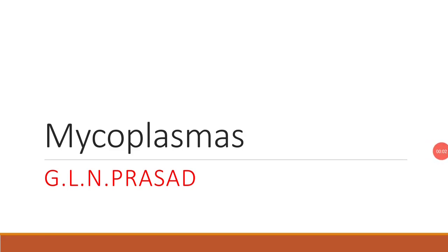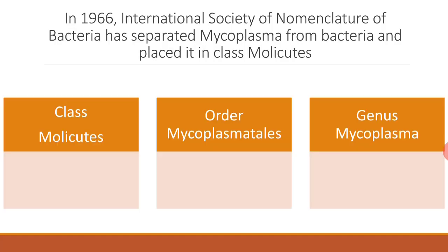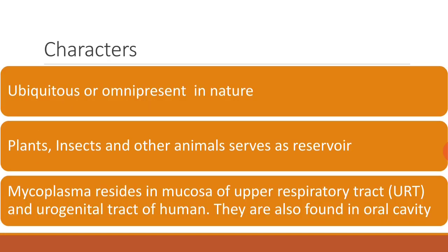My dear students, in this class, let us list out the characteristic features of mycoplasmas. In 1966, the International Society of Nomenclature of Bacteria separated mycoplasma from bacteria and placed it in class Mollicutes. The systematic position of mycoplasma is: it belongs to the class Mollicutes, order Mycoplasmatales, and genus Mycoplasma.